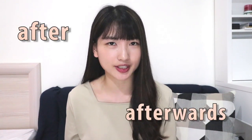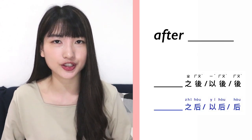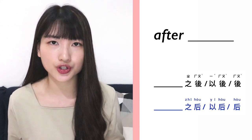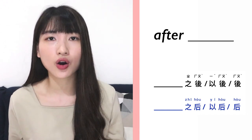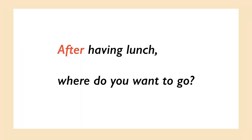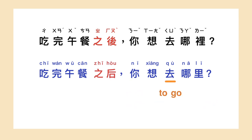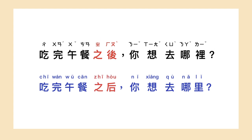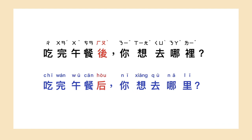Now let's talk about how to express 'after' and 'afterwards'. If you want to say 'after something happens' or 'after a certain time point', use: something + 之后, or 以后, or simply 后. For example, 'After having lunch, where do you want to go?': 吃完午餐之后你想去哪里?, or 吃完午餐以后你想去哪里?, or 吃完午餐后你想去哪里?